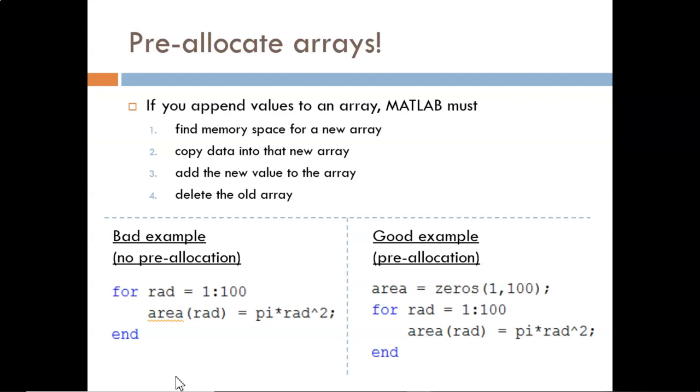Let's start by looking at one simple step to improve processing efficiency, pre-allocating arrays that will be changing within a loop. The examples at the bottom are identical except for this one line that initializes area to be a 1 by 100 array.